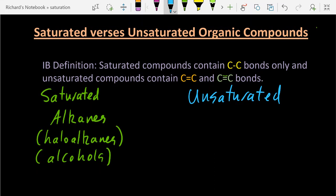And unsaturated, well that's going to be the alkenes with carbon-carbon double bonds and the alkynes with carbon-carbon triple bonds.